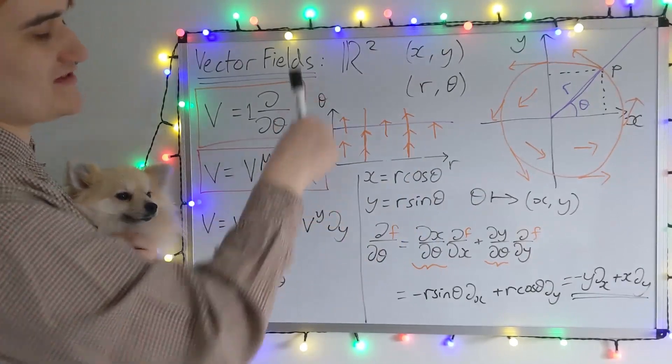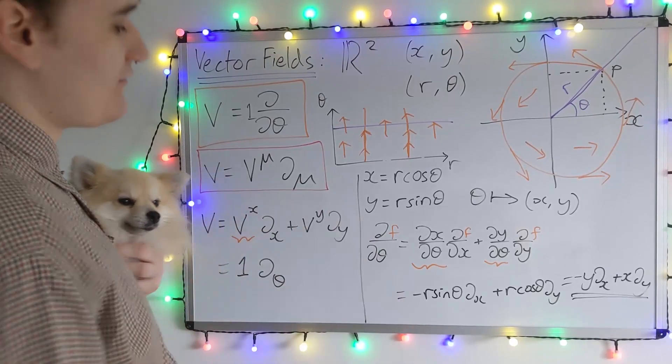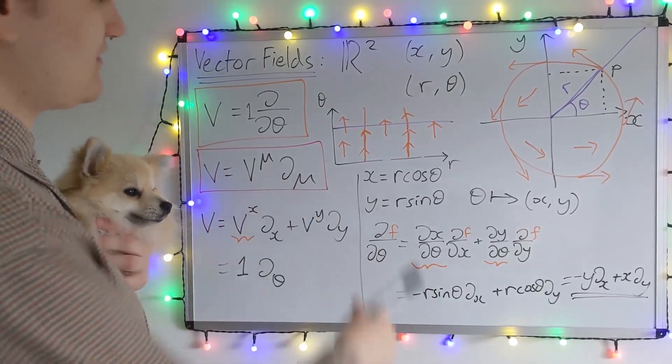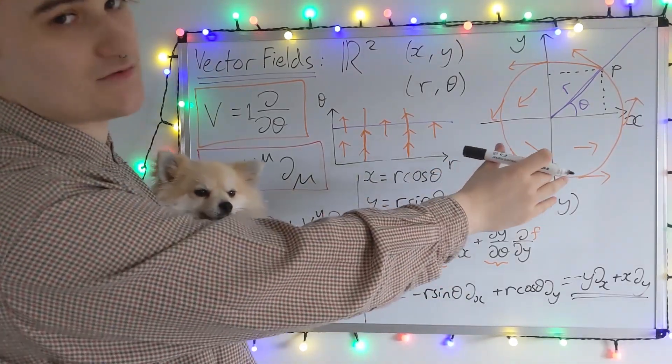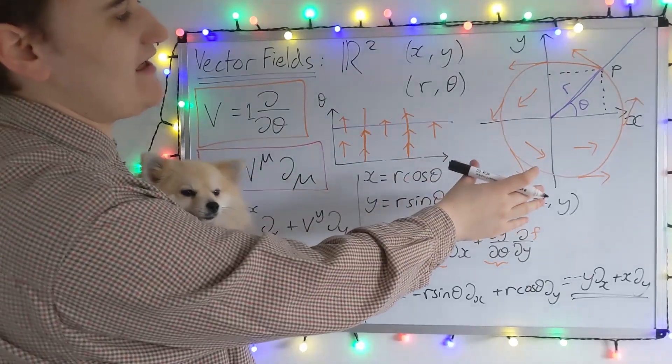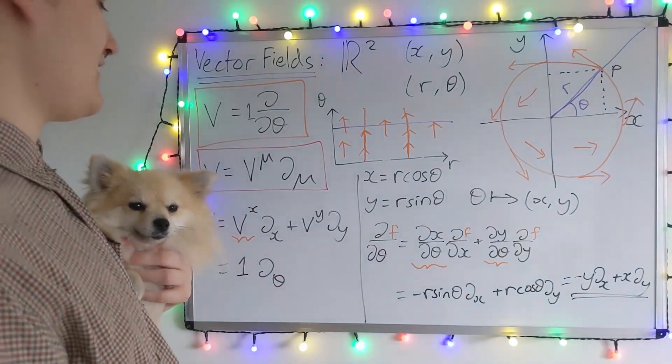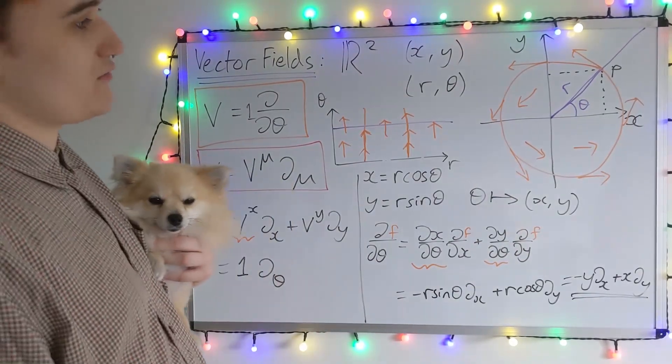But of course in the R theta chart it looks nothing like the real world. It's just all pointing in a theta direction. So the point with this is that you need to be very careful about talking about vectors in terms of coordinates. Because the vector in coordinates is a very different object to the actual vector on the manifold. We were just lucky here because the manifold and the chart are the same.